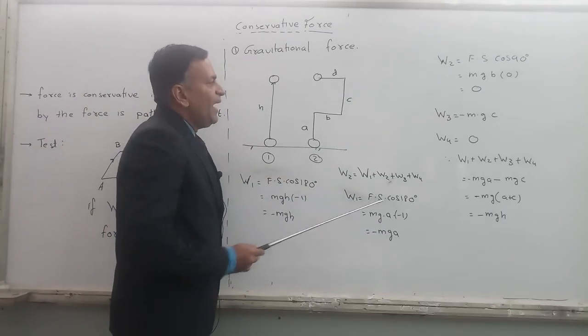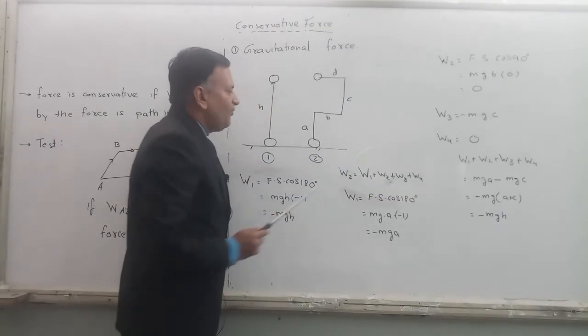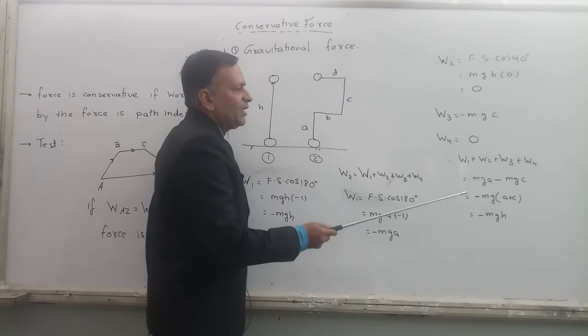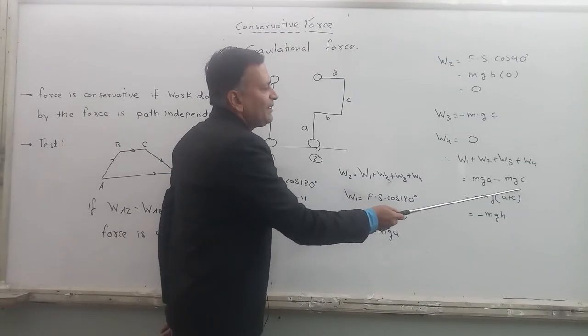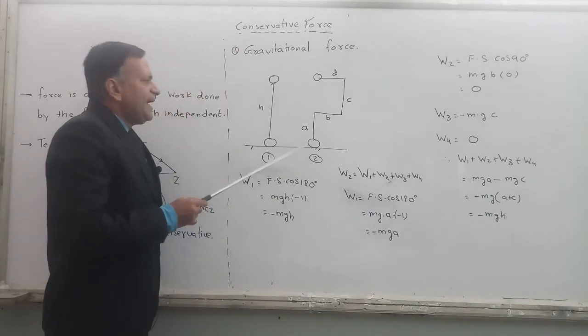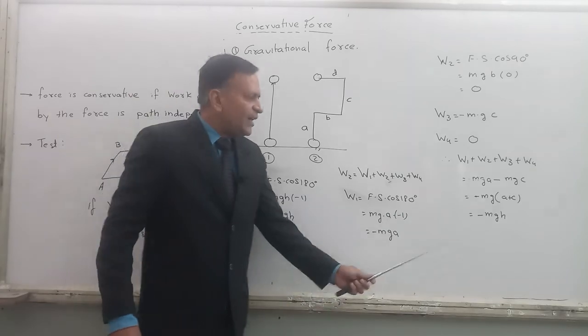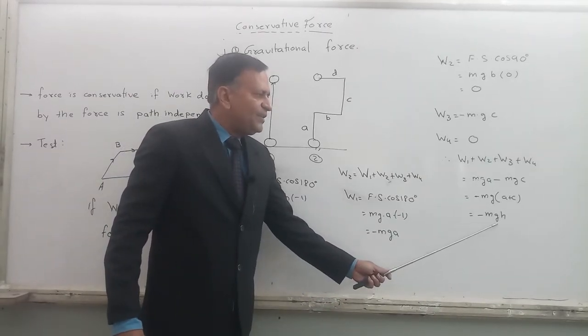So work done from here to here again becomes equal to 0. And now when I add W1, W2, W3, and W4, the total work done I am finding for this path. That will be what? Minus MGA minus MGC, and when you add them you will get A plus C. What is A plus C? A plus C is equal to H. So what is the total work done? The total work done is equal to minus MGH.